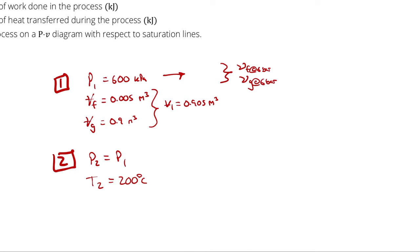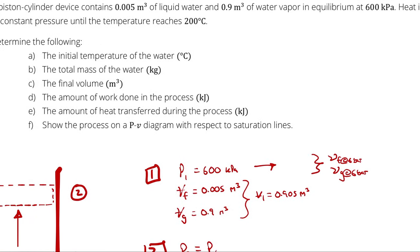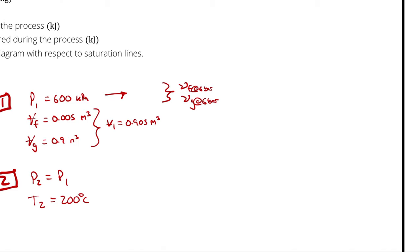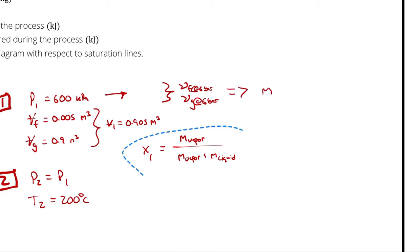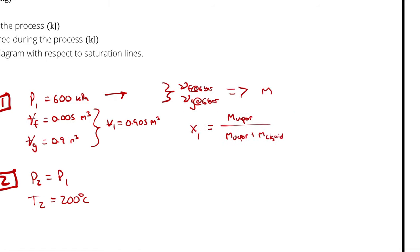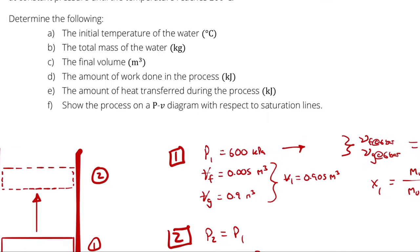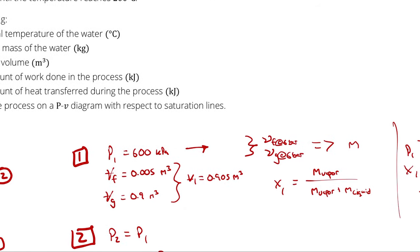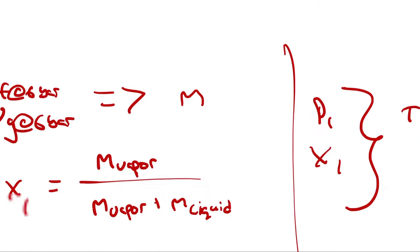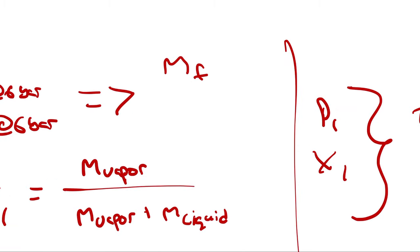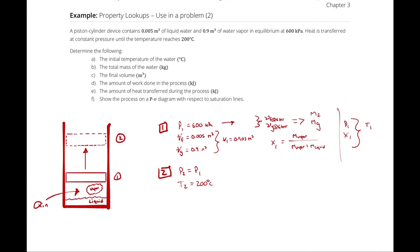Once I calculate quality, I can use it to interpolate for any needed properties. To get there, we first look up VF and VG at 6 bar, calculate quality, and then use pressure and quality for our property lookups — getting T1 and other quantities. The total mass of water will be calculated once we find the mass of vapor MG and mass of liquid MF, and MF plus MG gives us the total mass for part B.